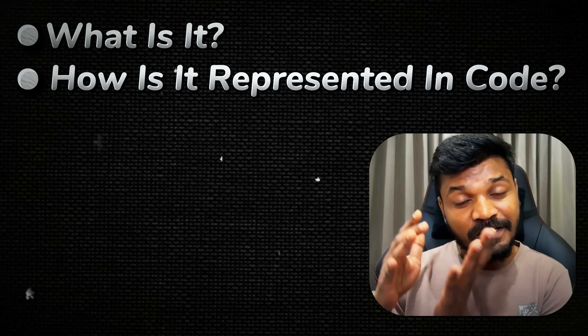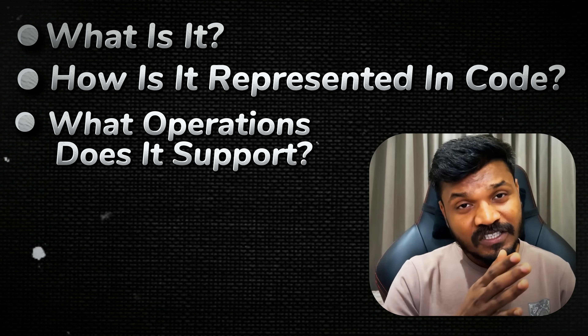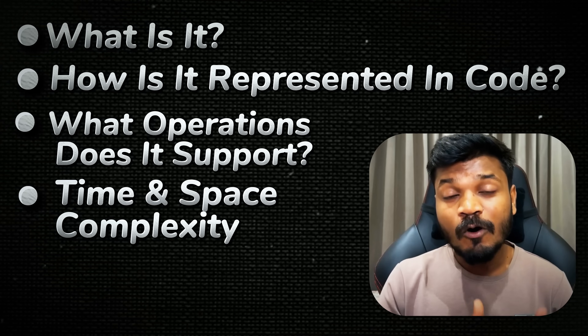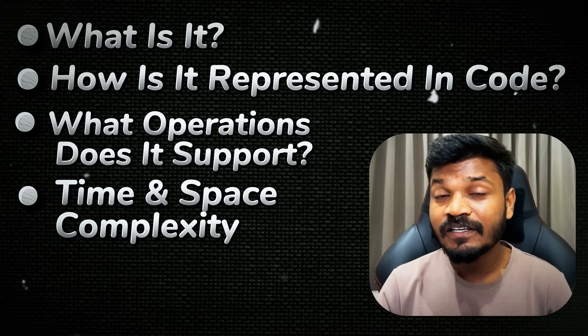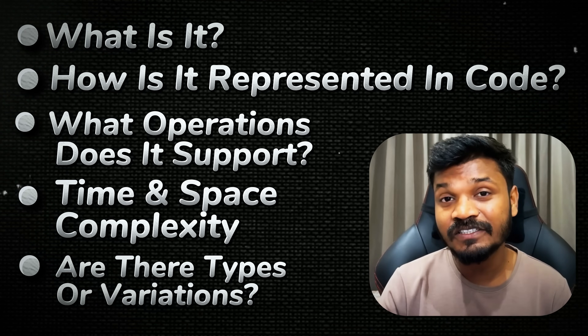Step 2: Break it like a Lego. Every topic in DSA is just a bunch of small ideas stuck together. So break it down: What is it? How is it represented in code? What operations does it support? What are the time and space complexities? Are there any types or variations?